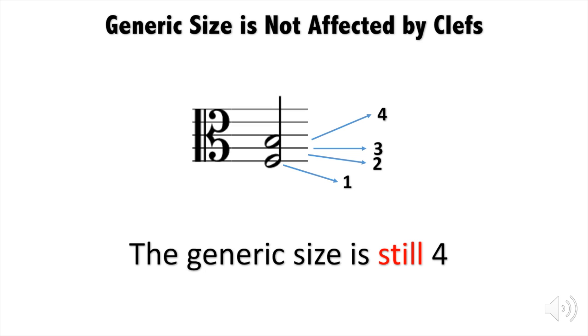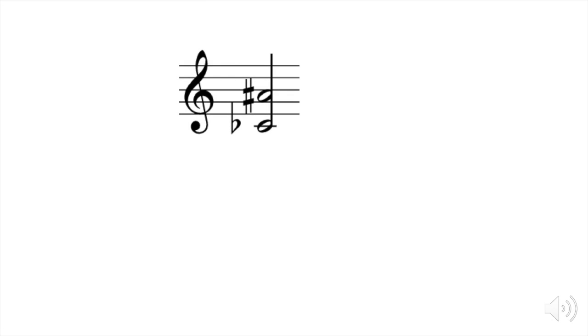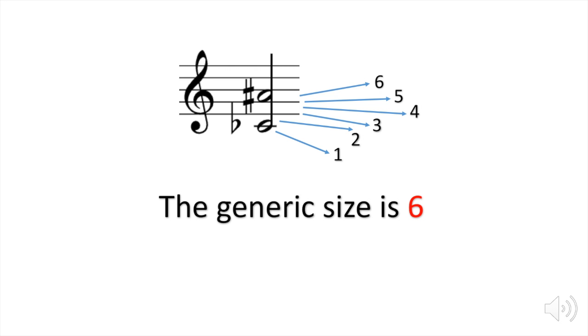Let's do another example. What is the generic size of these two notes? Again, we don't care about the accidentals. Just count from this note the number of slots it spans on the staff line. So 1, 2, 3, 4, 5, and 6. And the generic size of this interval is 6.